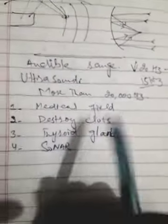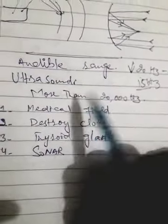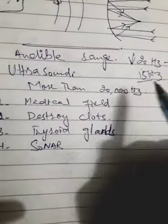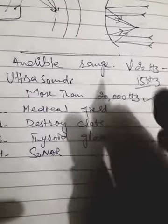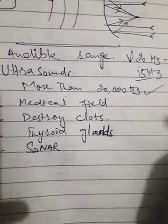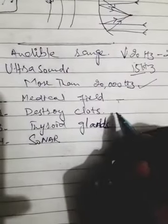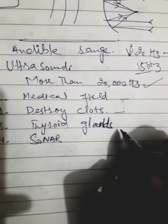So today we talk about ultrasound. What is ultrasound? It is a sound which is more than 20,000 hertz. So remember, a sound which has more than 20,000 hertz frequency is called ultrasound. Now we use it in the medical field, in destroying clots, in taking pictures of thyroid glands, and in SONAR.